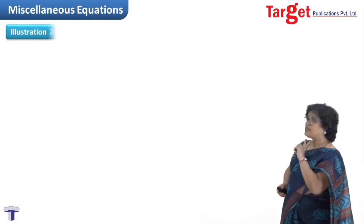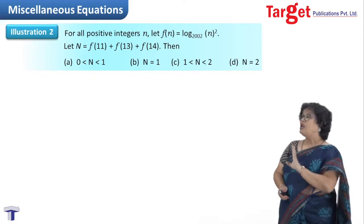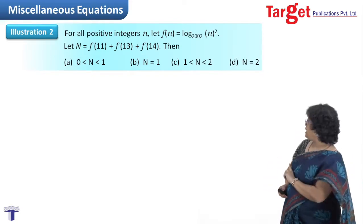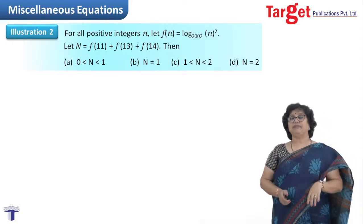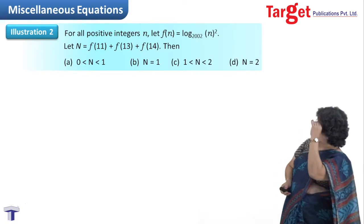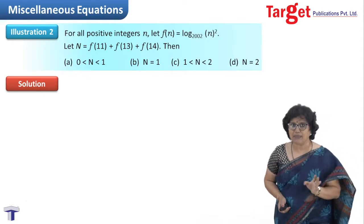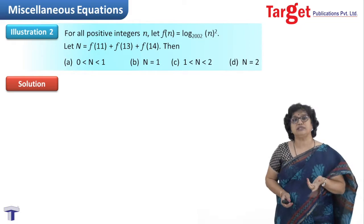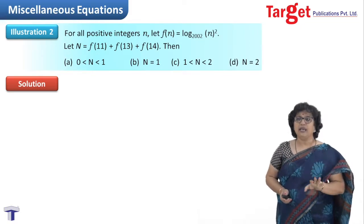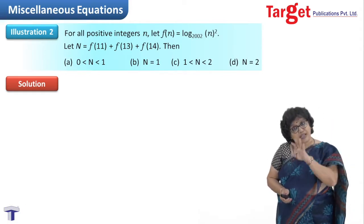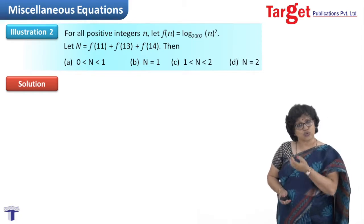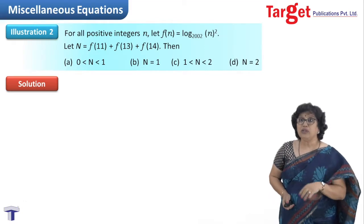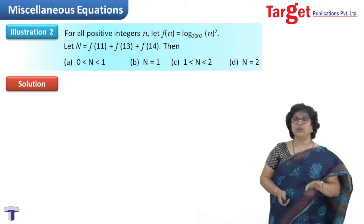For all positive integers n, let f(n) = log_{2002}(n²). Let N = f(11) + f(13) + f(14). Then conditions on n are given, and we have to choose the correct option. Whenever a question has numbers, especially in competitive examinations, those numbers also speak something. This question might have been designed in 2002, so it has 2002 in it. Also, 2002 has some role to play. Those 11, 13, 14 must be connected somewhere to 2002.